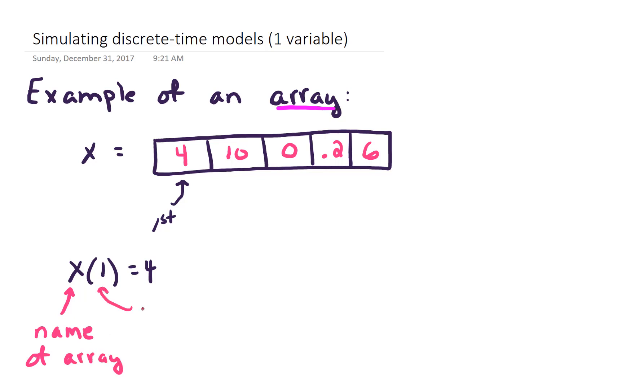The number in the parentheses, that 1, means first position. And equals 4. That 4 tells us the value in that position.